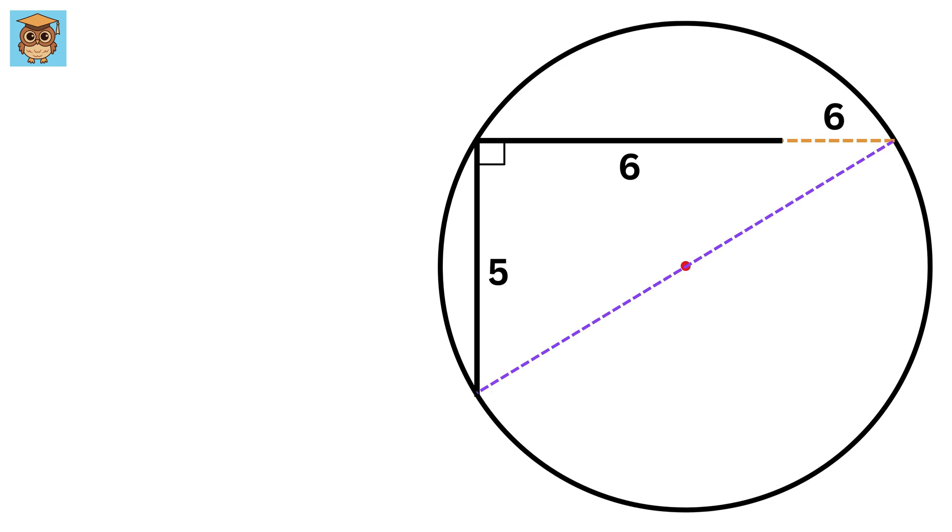Now draw this line such that we get a right triangle here. What do you think this line will be? Yes, you guessed it right! It will be the diameter of this circle.